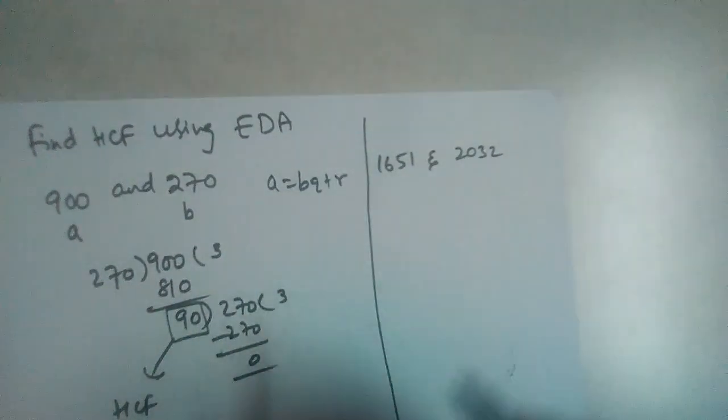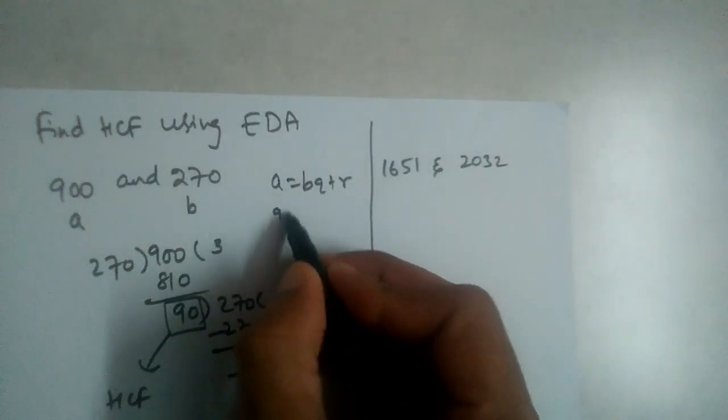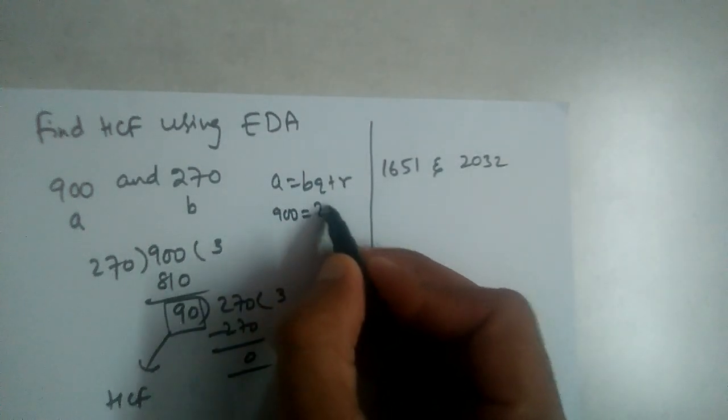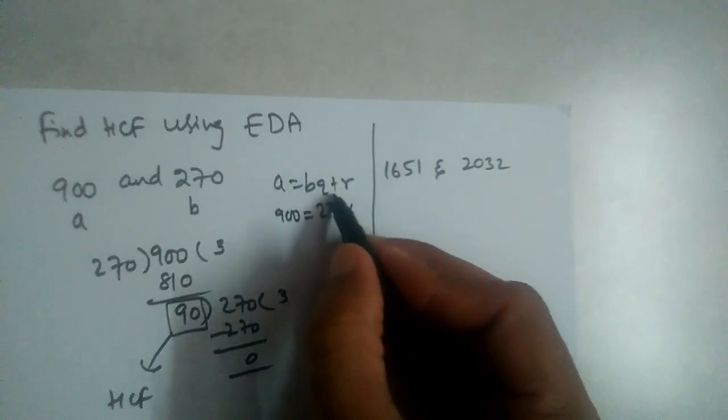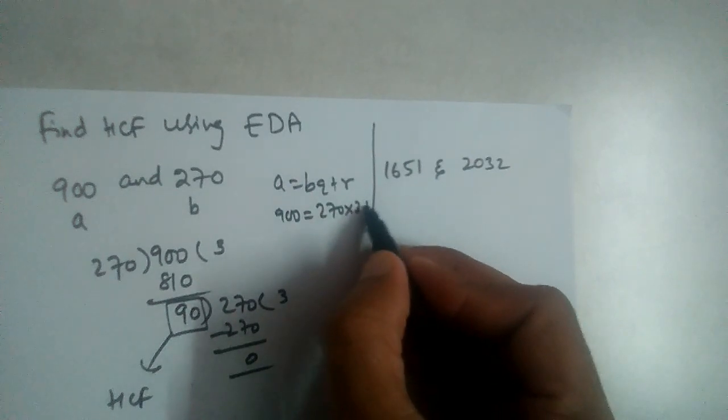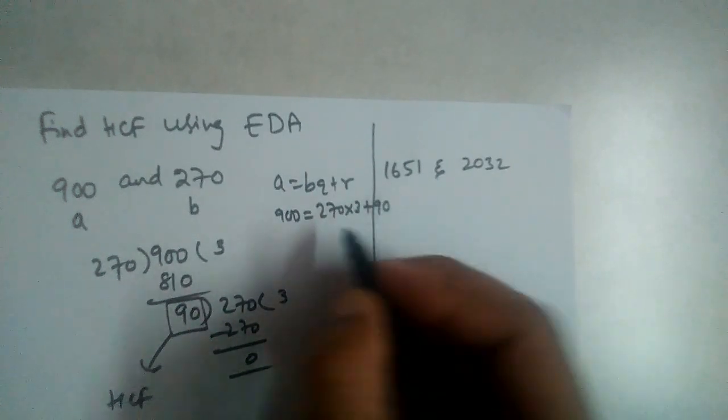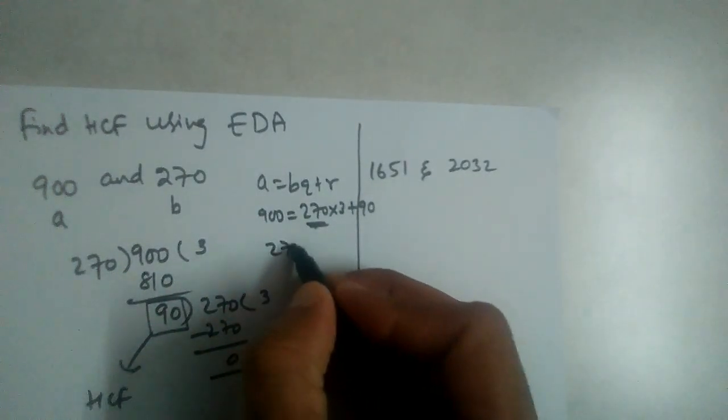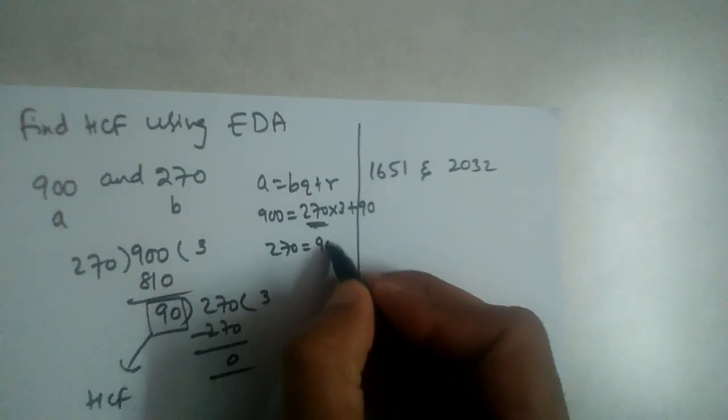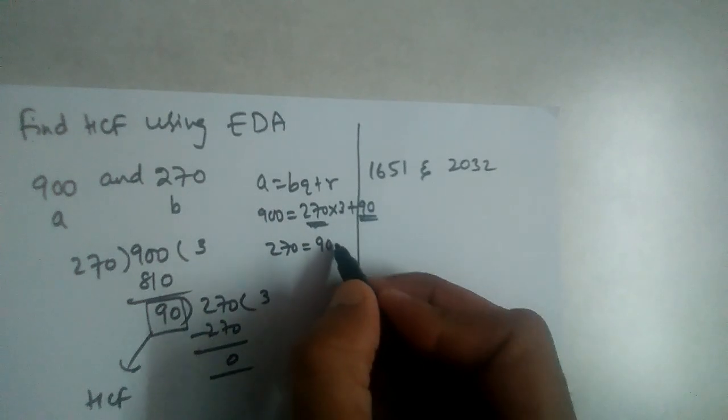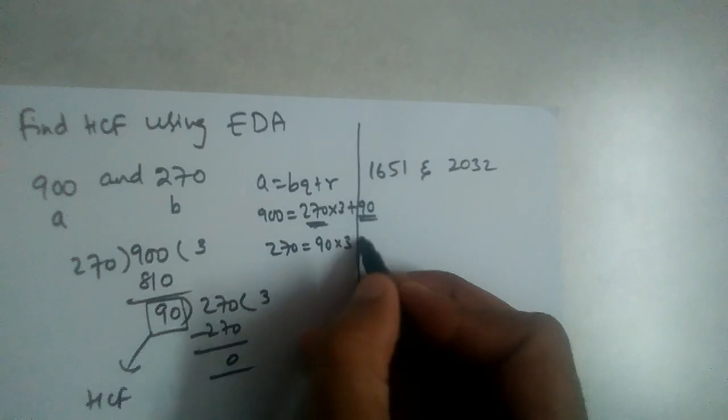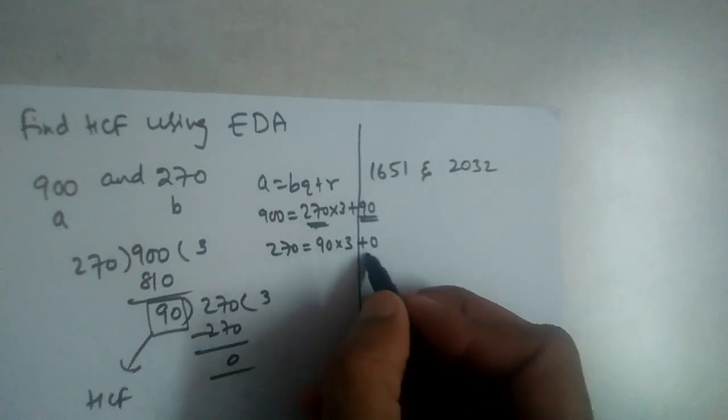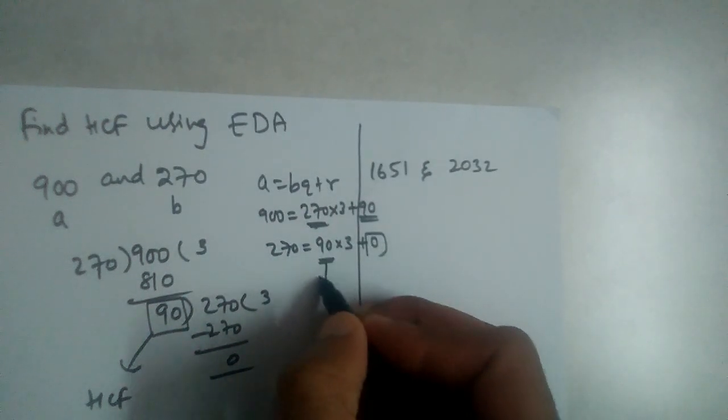A is equal to bq plus r, like this: 900 is equal to b, which is 270, into 3 plus remainder 90. Again, this 270 should be taken as a and this r should be taken as b. So 270 is equal to 90 into 3 plus 0. So we got remainder 0, and the value of b will be HCF.